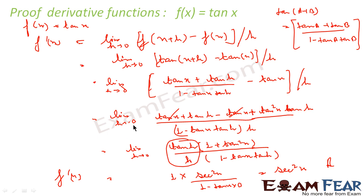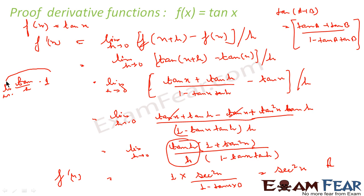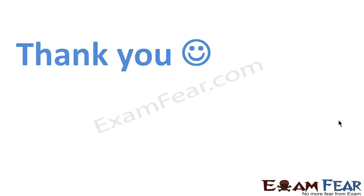So what we have done: since we couldn't directly apply h=0 (it would give 0/0), we simplified, factored out tan h/h, and used the known limit that tan h/h → 1 as h→0, to get f'(x) = sec²x. If you don't know this limit, please watch my class 11 limits chapter. Thank you.